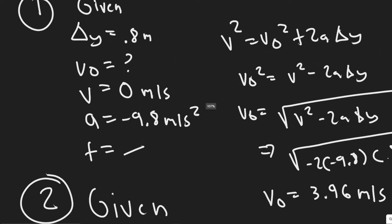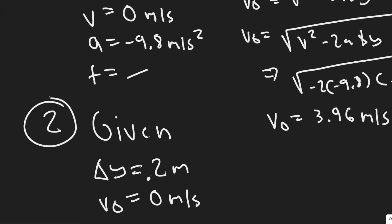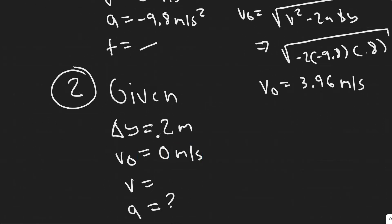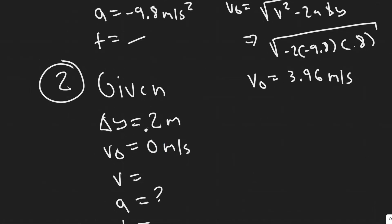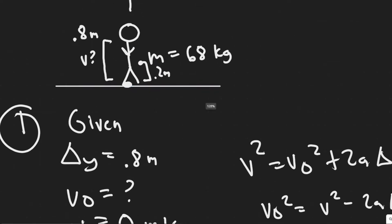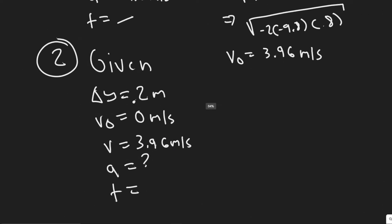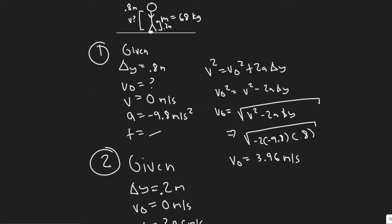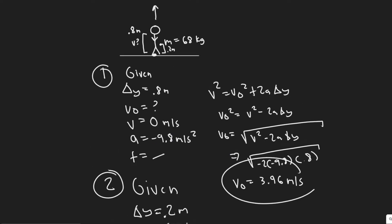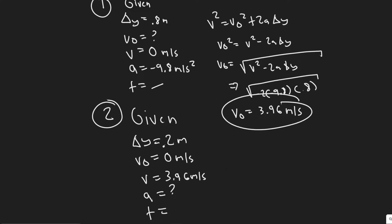The reason the initial velocity is 0 is because at the bottom, they start in their normal standing position, then crouch down 0.2 meters. At that point is where we start our interval — they're going to go up 0.2 meters, but at the beginning of that their velocity is 0; they're starting from rest before they jump up. The final velocity of this interval is exactly what we just solved for — 3.96 m/s — because it's the same point: the end of the 0.2 meters right before they jump.